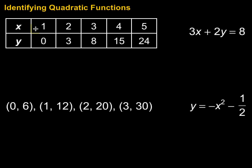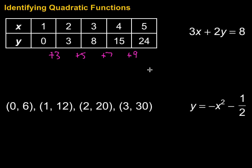The second differences — remember, to determine if something is a linear function, we look at the first differences, where we figure out the difference between one value and the next. We have to check both the x's and the y's. Checking the x's first: plus 1, plus 1, plus 1, plus 1 — we're good there. Then we check the y's: from 0 to 3 is plus 3, from 3 to 8 is plus 5, from 8 to 15 is plus 7, and from 15 to 24 is plus 9. Those are the first differences.